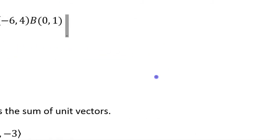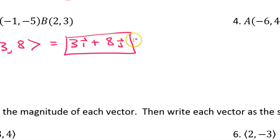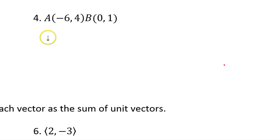Number 4. Component form, 0 minus negative 6 or 0 plus 6 is 6. 1 minus 4, that's negative 3. So, that's component form. Unit vector form, 6i. I started to say plus, but when it's negative, we simply say minus 3j.